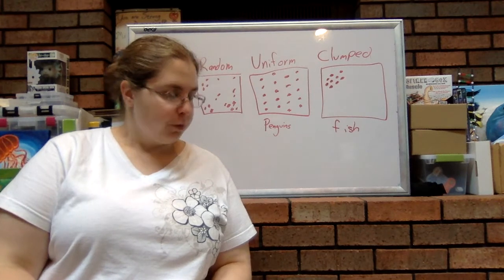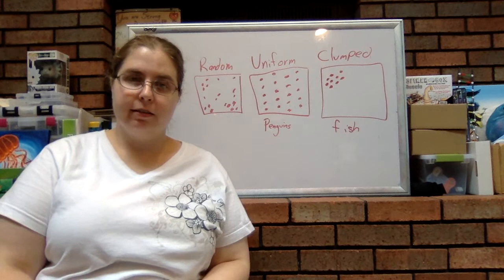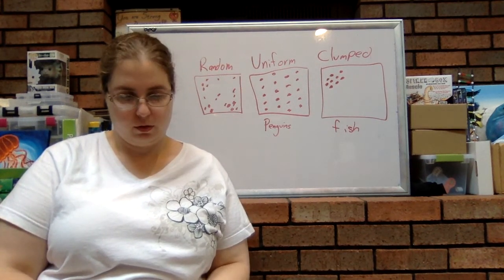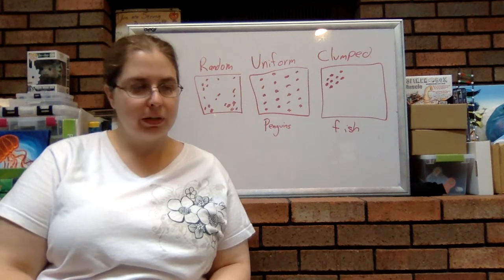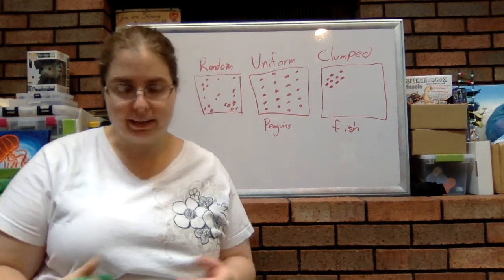And as a result, this tends to lead to kind of smaller groupings. Now, this is the least common of the three dispersion methods. We do kind of see this in certain species like trees and plants.